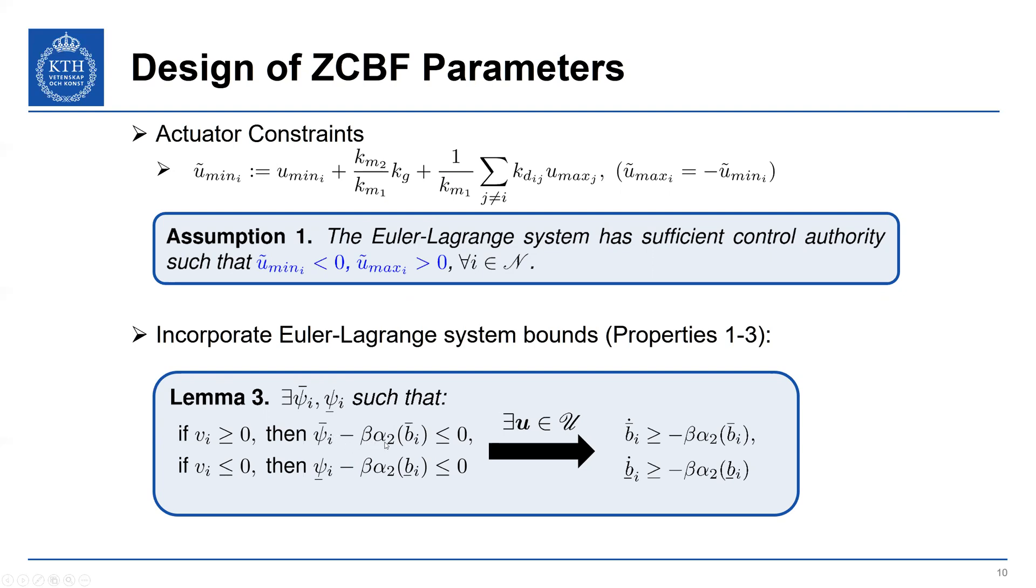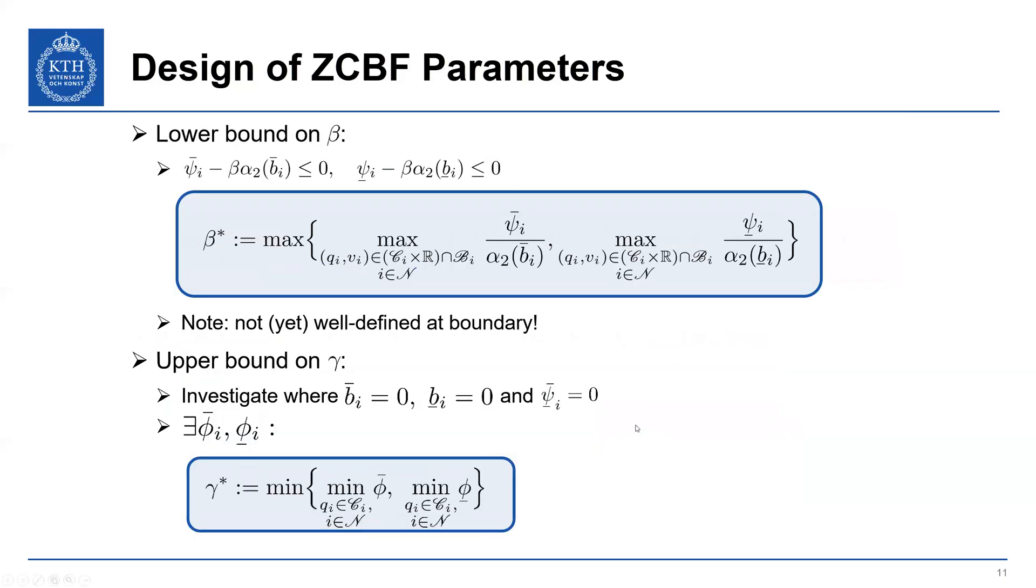then there exists a U, satisfying our input constraints, so that our ZCBF conditions hold. So basically, we've converted the problem from checking the ZCBF condition to now checking this condition. So you can think of these psi_i terms as bounds on our derivatives of our control barrier functions.